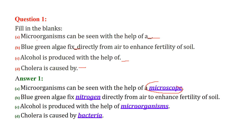To see micro-organisms, because they are micro or small in size, we need a microscope. Blue algae or green algae fix nitrogen directly from air to enhance fertility of soil. Alcohol is produced with the help of micro-organisms. Cholera is caused by bacteria.